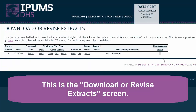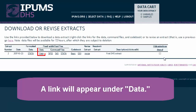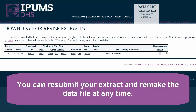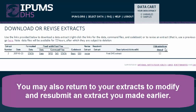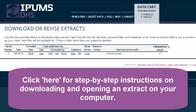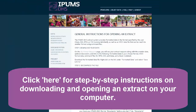This is the Download or Revise Extract screen. A link will appear under Data. If you selected a type of formatted data, a link will also appear under Formatted Data. You can resubmit your extract and remake the data file at any time. You may also return to your extracts to modify and resubmit an extract you made earlier. Just click Revise next to the Extract of Interest. Click here for step-by-step instructions on downloading and opening an extract on your computer.